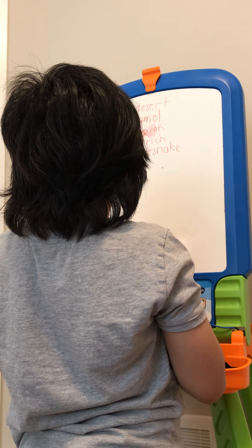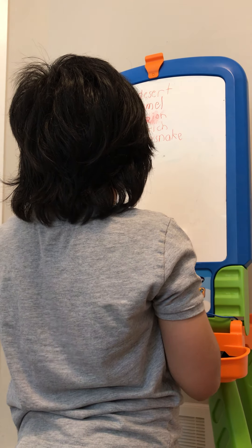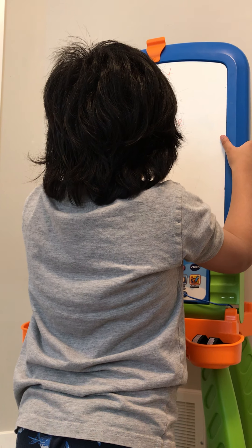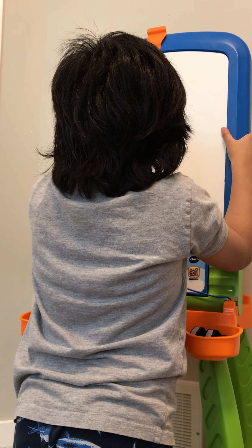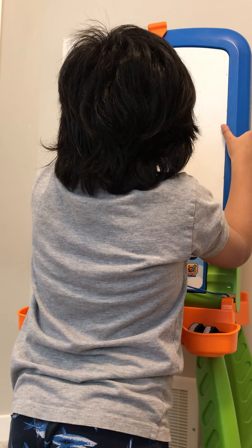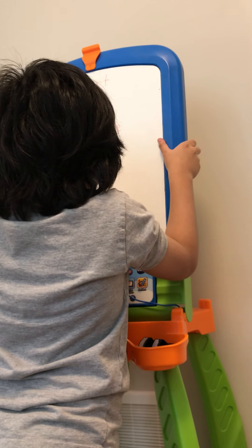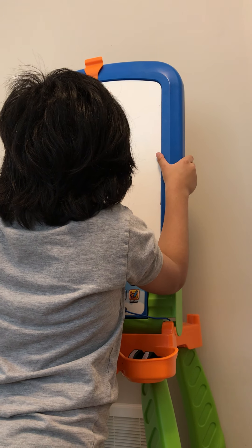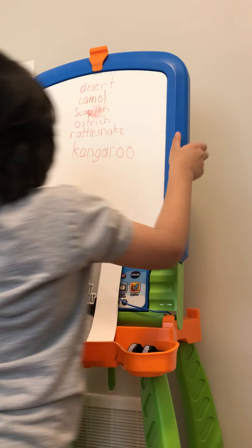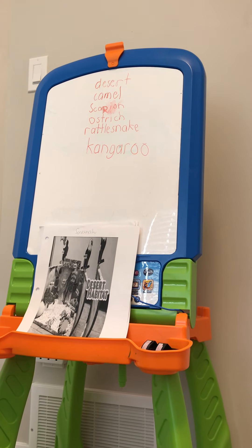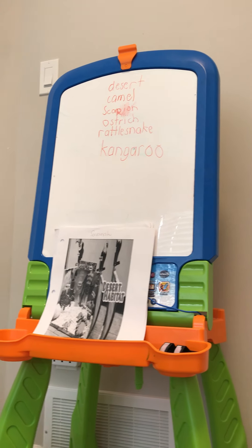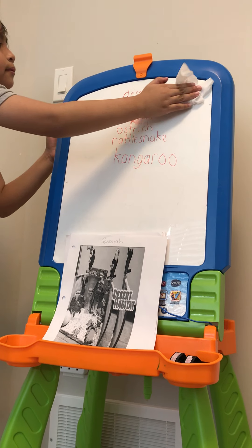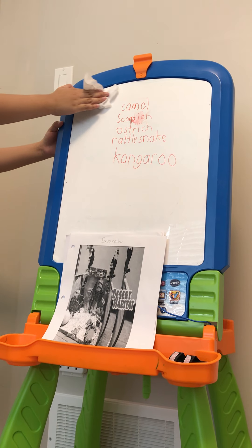What's next? The last one. It hops — it is a kangaroo. So we got camel, scorpion, ostrich, rattlesnake, and kangaroo.